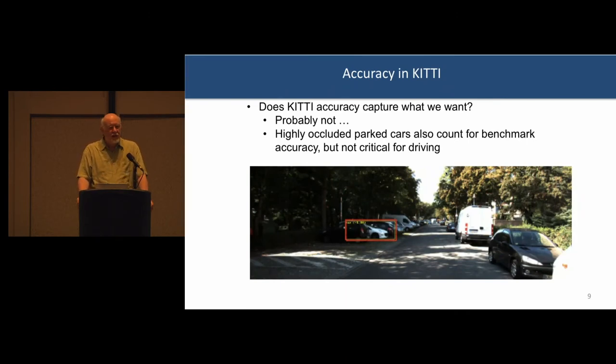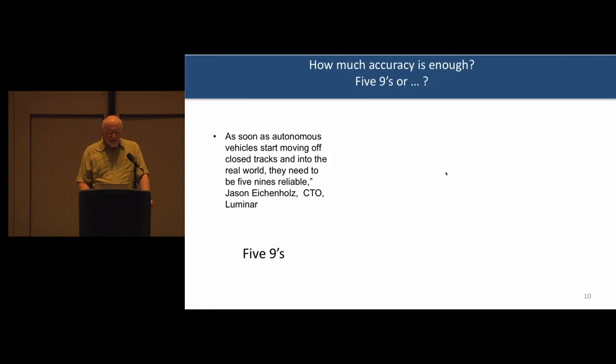So when we looked at accuracy, there are metrics which have been tuned to autonomous driving, like accuracy and KITTI. Does KITTI give us what we need? Probably not, right? It doesn't distinguish really between being able to identify each individual occluded car individually versus a pedestrian right in the roadway. If you miss those, they are equal value.